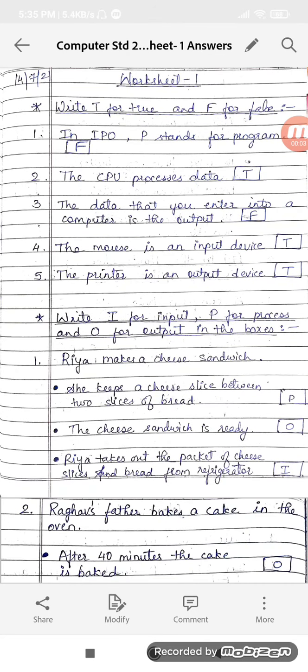Jai Swaminarayan students, today let us discuss the answers of the worksheet which I have sent you on 14th July. First is let's write down true or false. You need to write T for true and F for false.